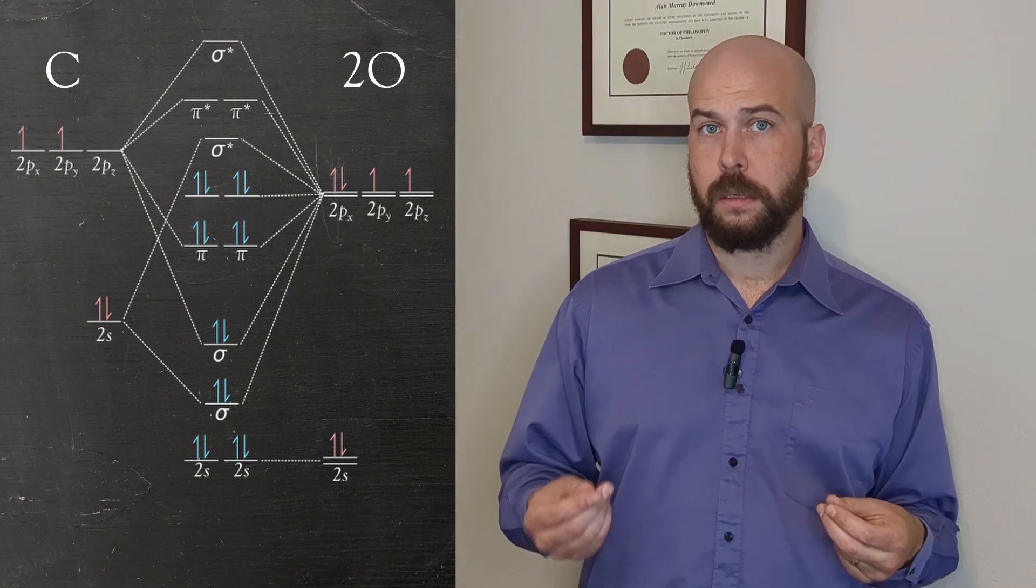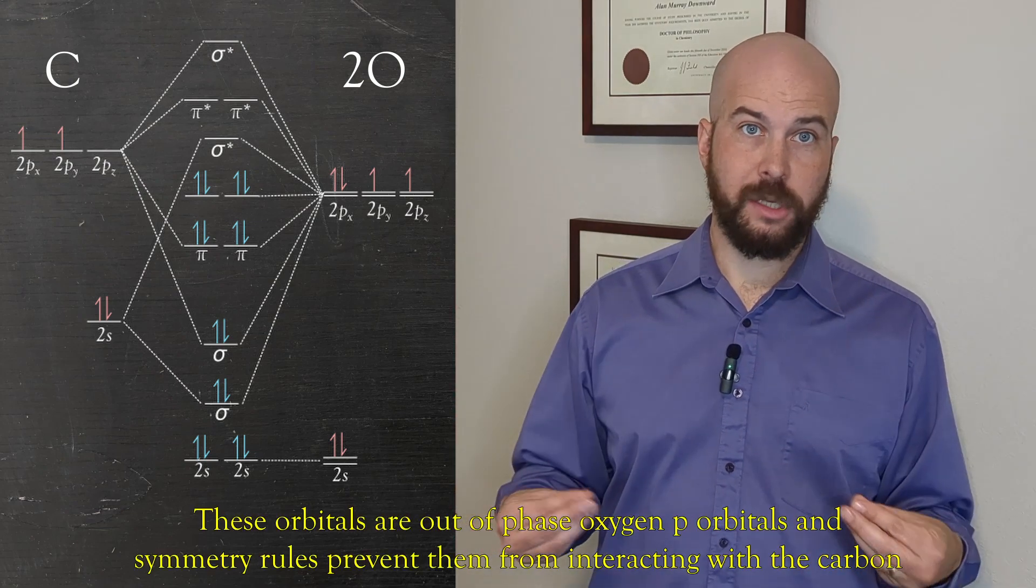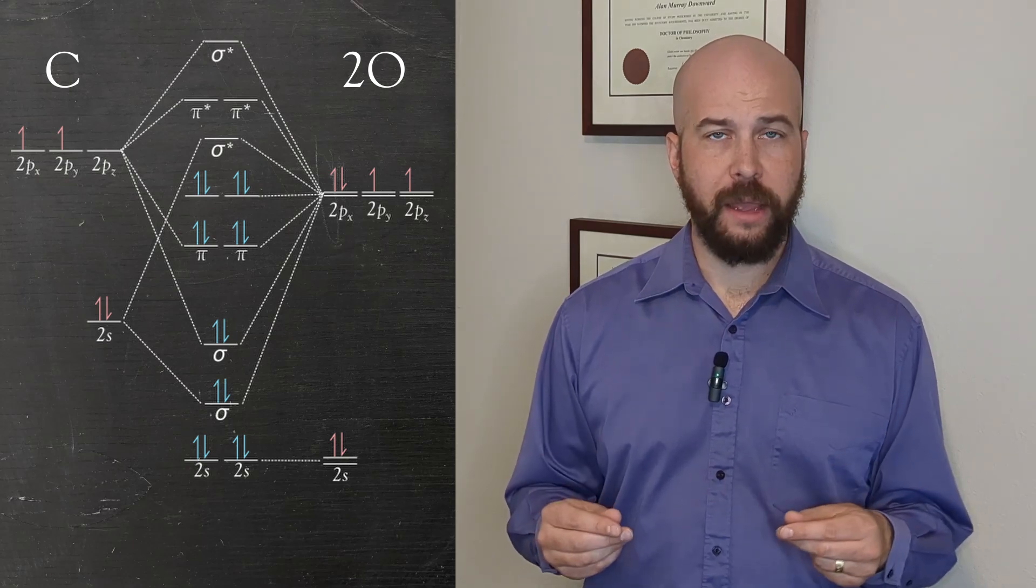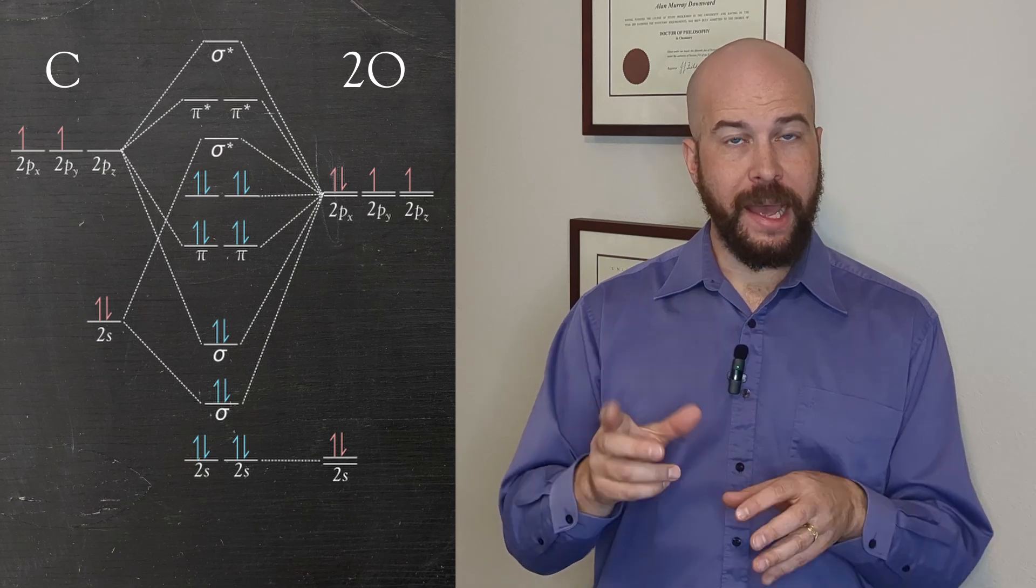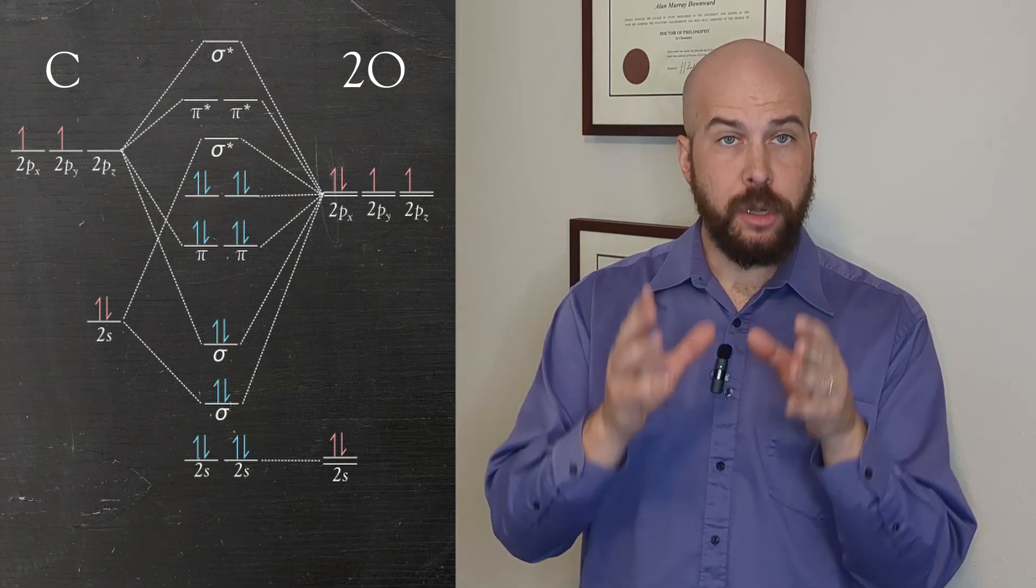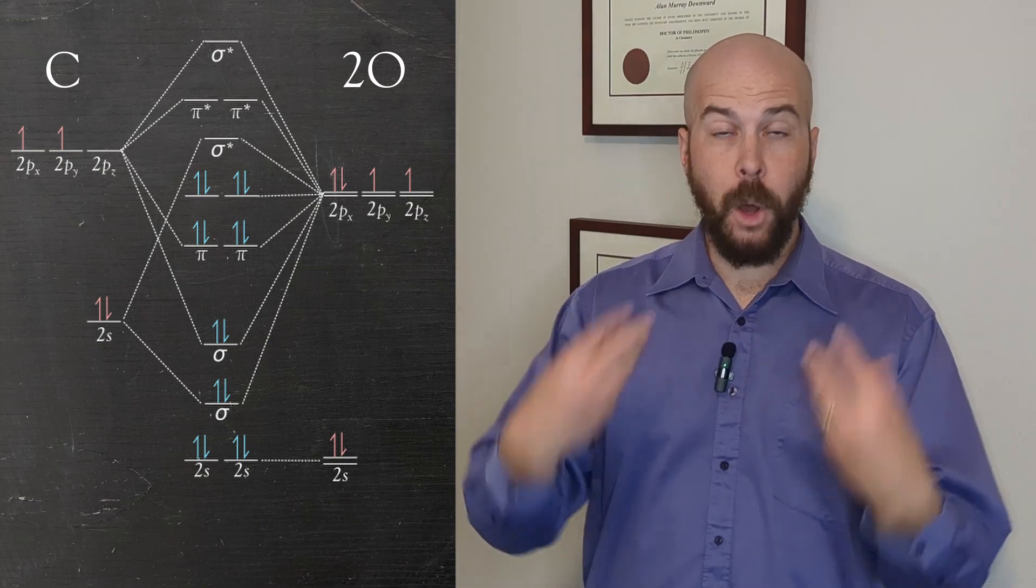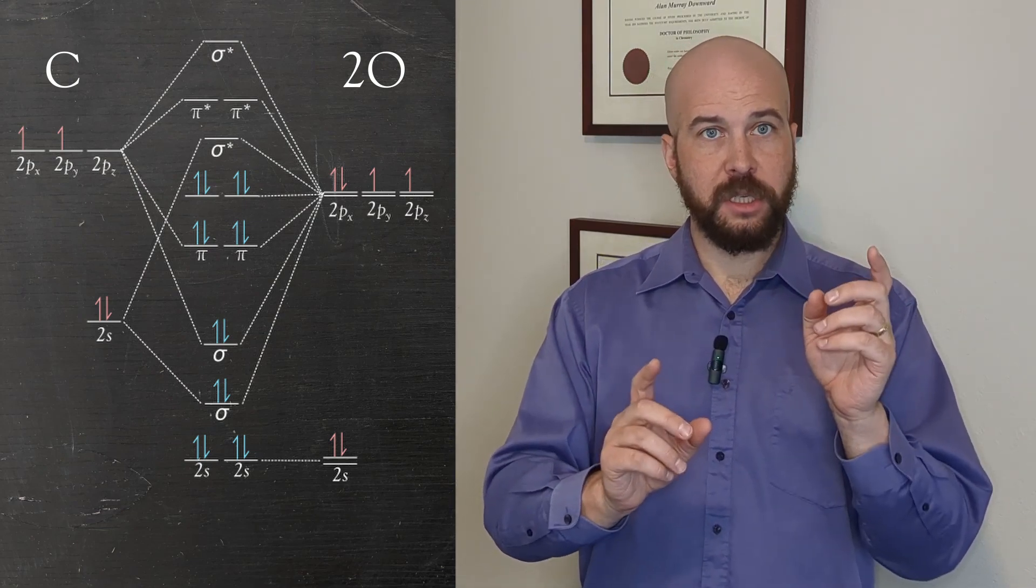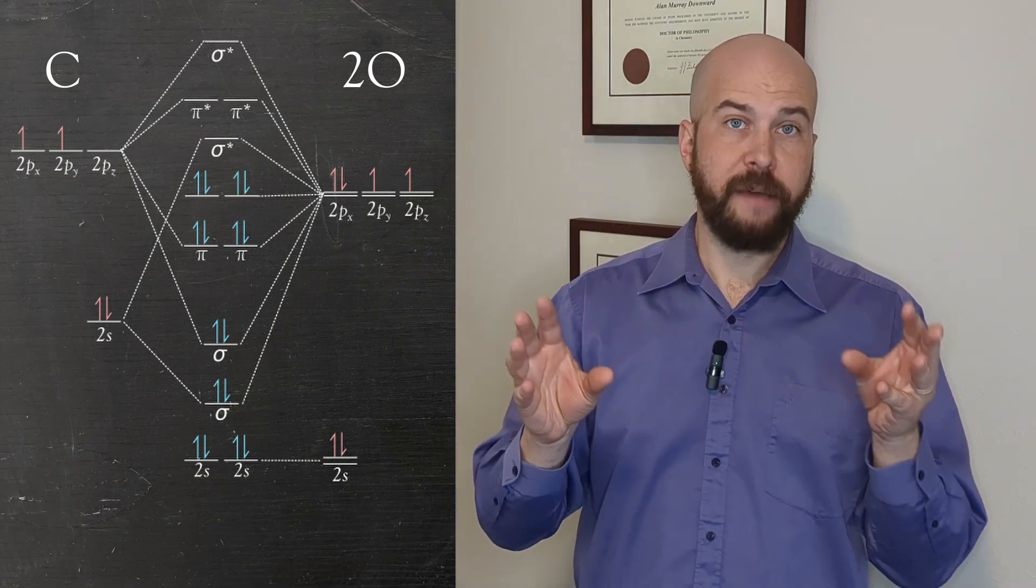At this point we have two more p-type orbitals from the oxygen which are going to simply go into non-bonding interactions. If we look now at this final molecular orbital diagram we see that we have four bonding orbitals and we also have four non-bonding orbitals. These non-bonding orbitals contain the lone pairs for the oxygen and those four bonding orbitals are what we would expect as we would predict that each oxygen has a double bond to the carbon. So in total carbon dioxide should have four bonds.